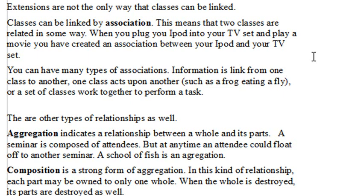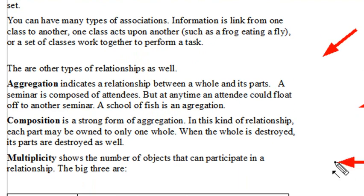And in that sense, they're related basically by passing information one to another. You could also have one class act upon another, like in your ecosystem, a frog could eat a fly. Or you could have sets of classes acting together to perform a task. There are other types of relationships as well, such as aggregation and composition and multiplicity.